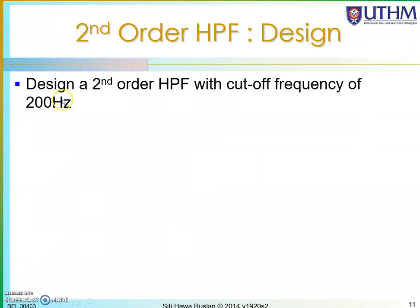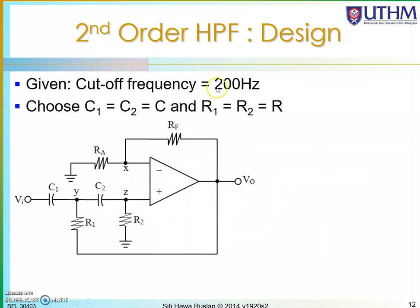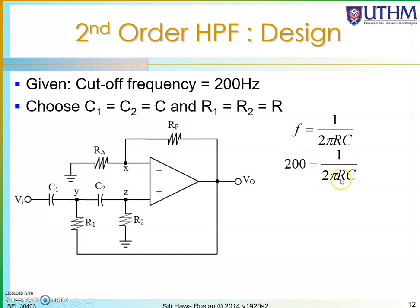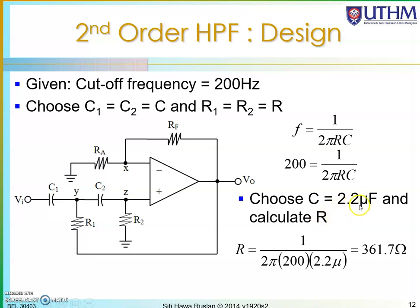To design a second order high pass filter with a cutoff of 200 Hz: draw the circuit with two RC pairs. Using the cutoff frequency formula f = 1/(2πRC) with f = 200 Hz, you have two unknowns R and C. Choose C = 2.2 µF, then calculate R. Using this equation, R comes out to 361.7 Ω, and you can choose the nearest standard value of 360 Ω.